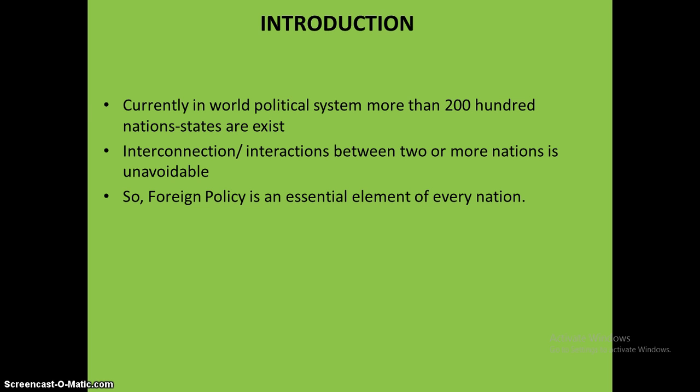Currently in the world political system we have more than 200 nation states that exist, and between two or more nations there are different kinds of interactions and interconnections. Interactions in terms of political, economic, trade, military, etc., and interconnections in terms of geographical connectivity, waterways connectivity, or airways connectivity. This type of interaction and interconnections we cannot avoid in the international political system.